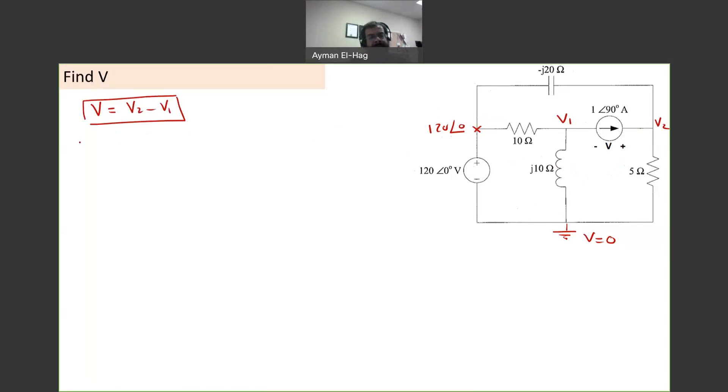So nodal analysis, as we know it, KCL at V1. Assume the currents are leaving, except for the current source, because this one has its own direction. So I cannot alter that, but I can assume the currents are leaving in all other segments of the circuit.